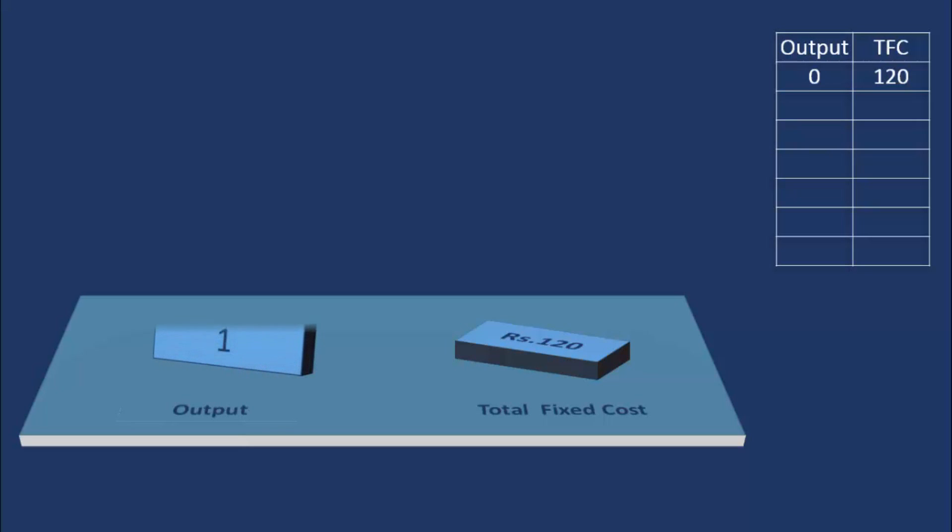The producer produces one unit. The fixed cost is Rs. 120. We shall continue to tabulate the findings.